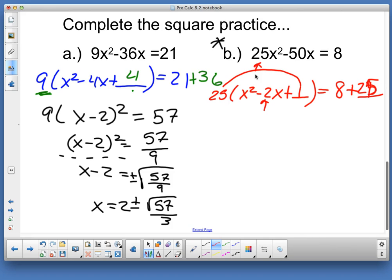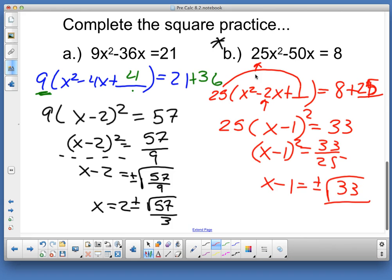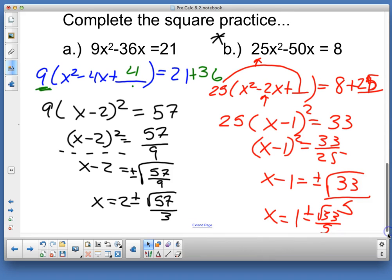So that becomes 1. So I'm going to add 1 to both sides. Or really, is it 1? Wouldn't that be 25 times 1? So it should be 25. Make sure you pay attention to that. Then after I get that done, I already know that I've got 25 times x minus 1 squared equal 33. I can finish out my problem. I've got 33 over 25ths. And I can take the square root of that. So I've got x minus 1 equals plus or minus square root of 33 over 5ths. And then I add my 1, x equals 1 plus or minus the square root of 33 over 5ths.